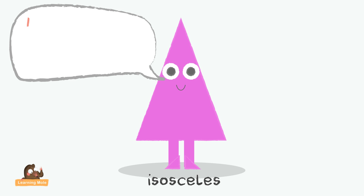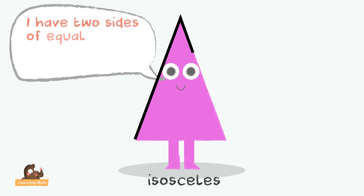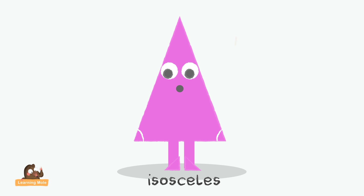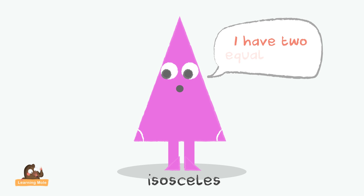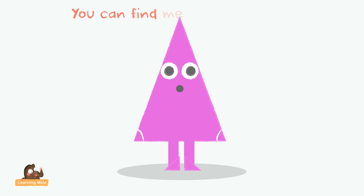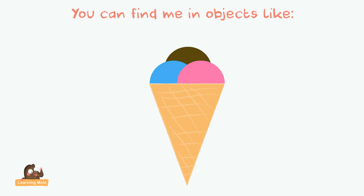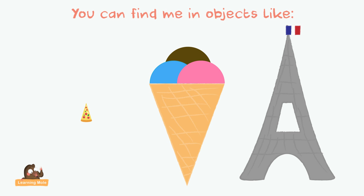Isosceles. I have two sides of equal length and one side that is different. I have two equal angles. You can find me in objects like an ice cream cone, the Eiffel Tower in France, or a slice of pizza.